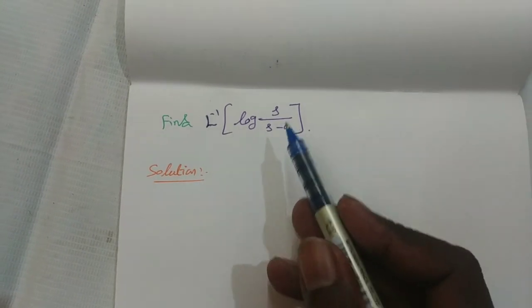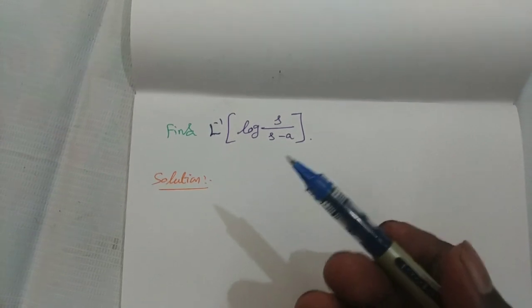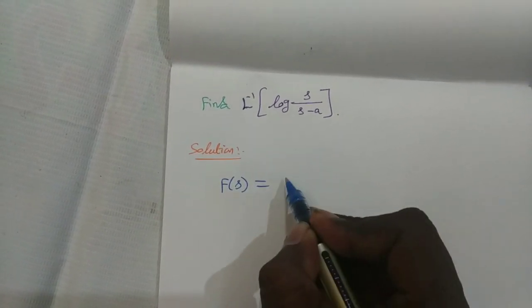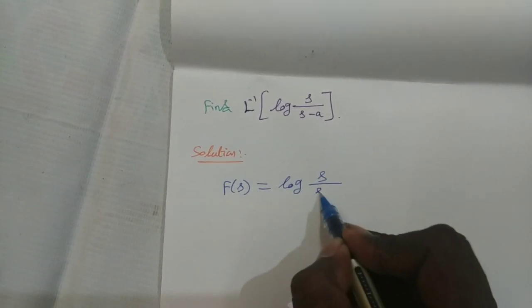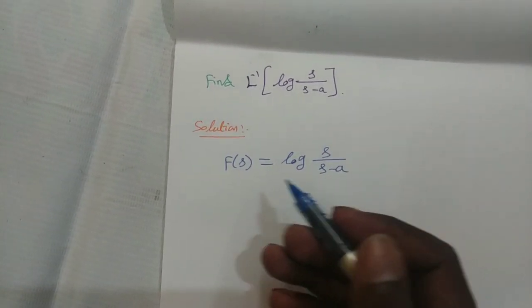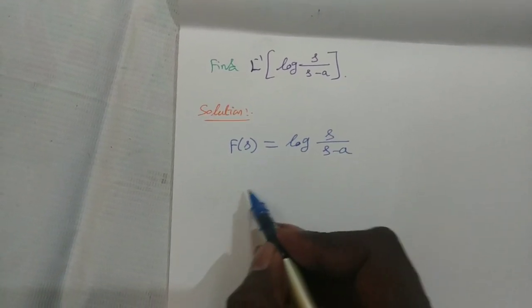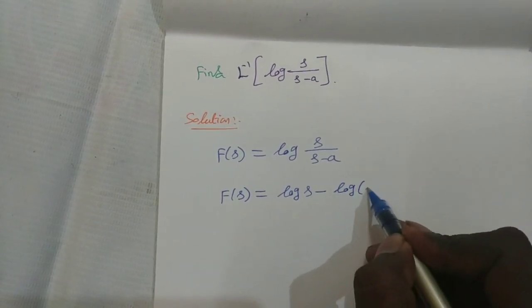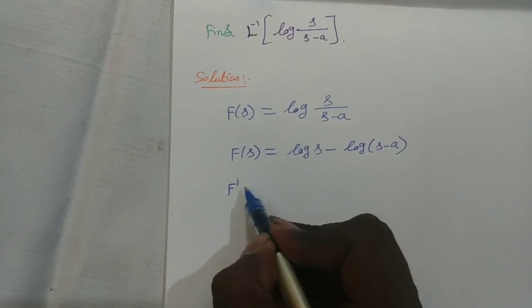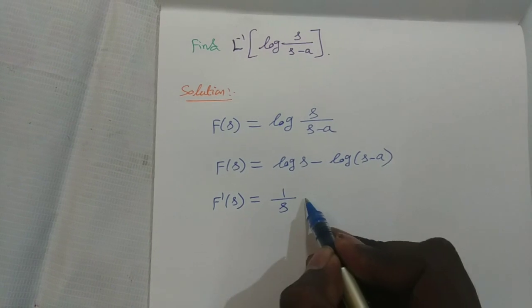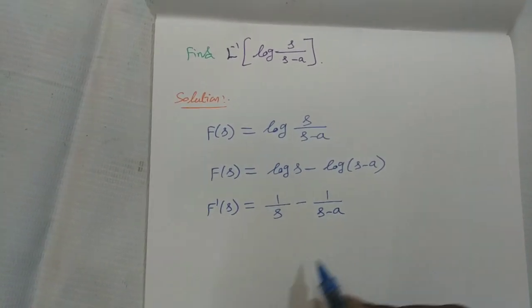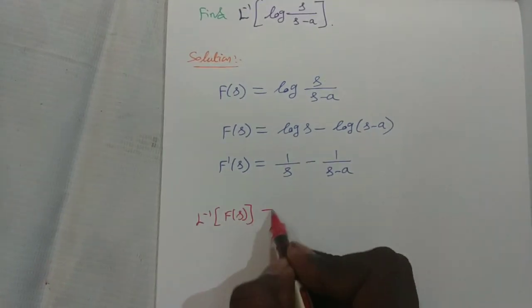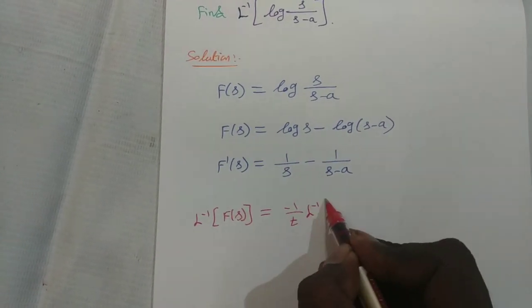Find L inverse of log(s/(s − a)). This is similar to the previous problem, so we use the same property. Taking the inner term as capital F(s), we have F(s) = log(s/(s − a)). Applying the log(m/n) formula: F(s) = log s − log(s − a). From the property we need F'(s), so differentiating: F'(s) = 1/s − 1/(s − a).